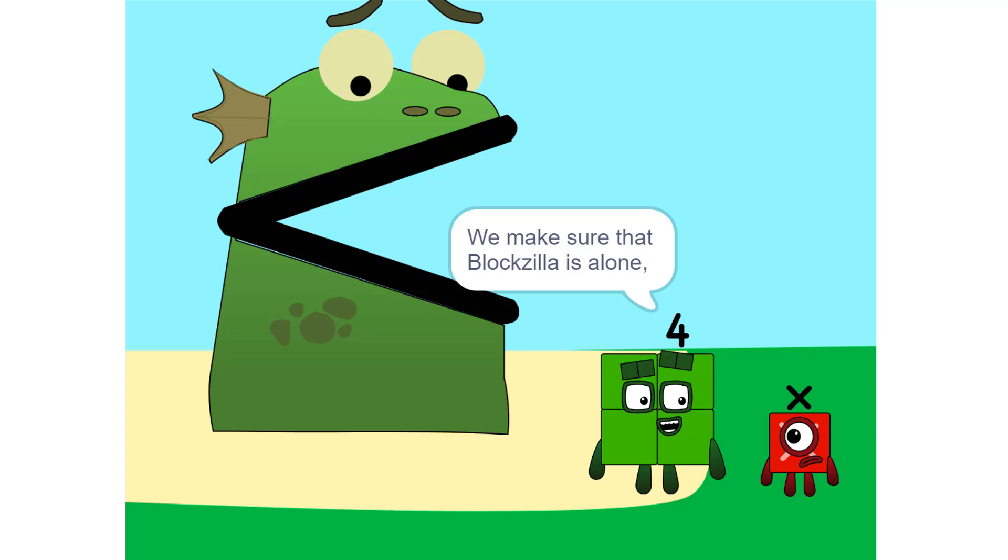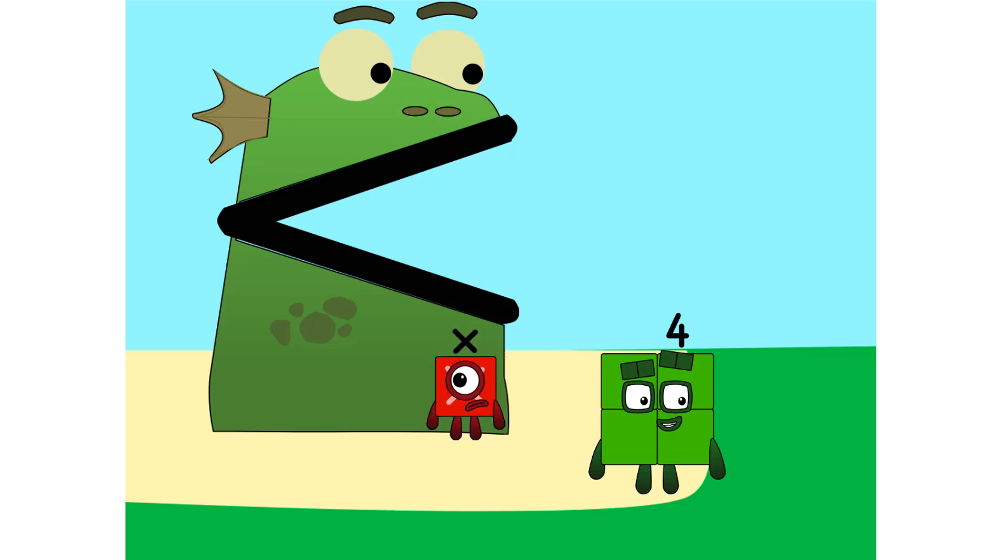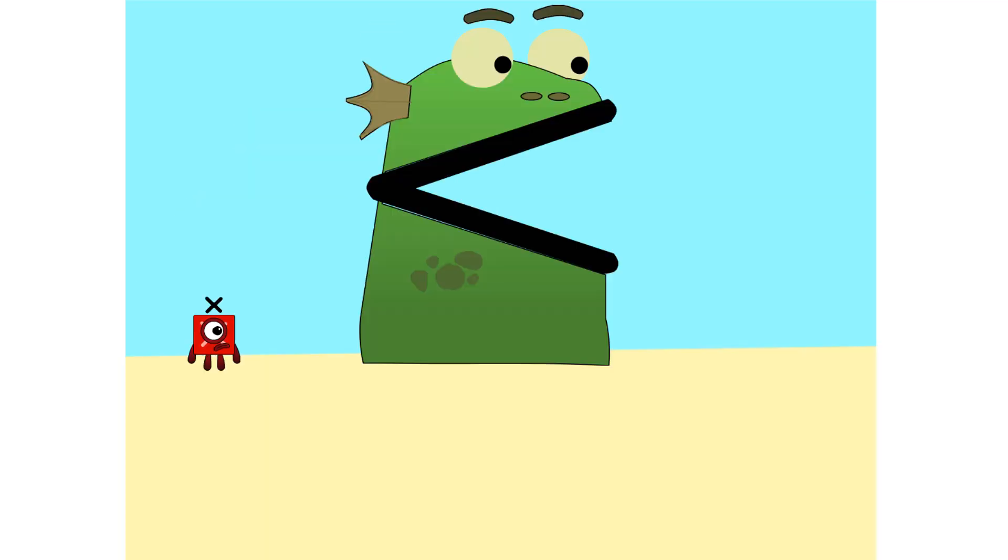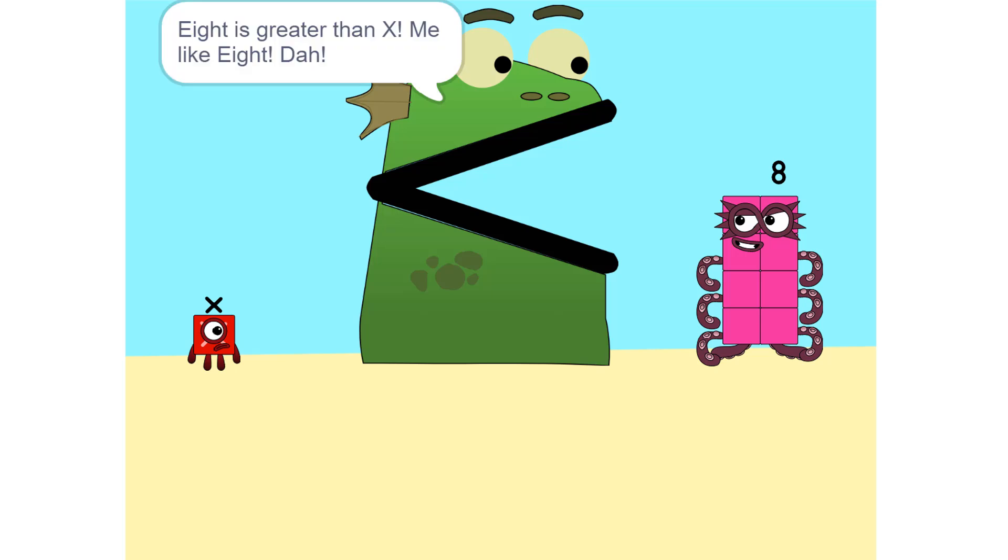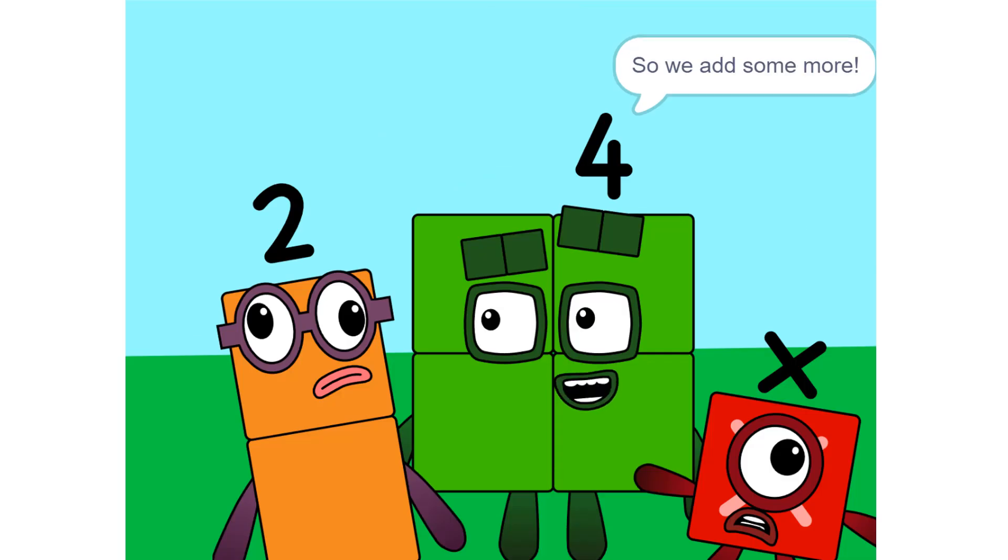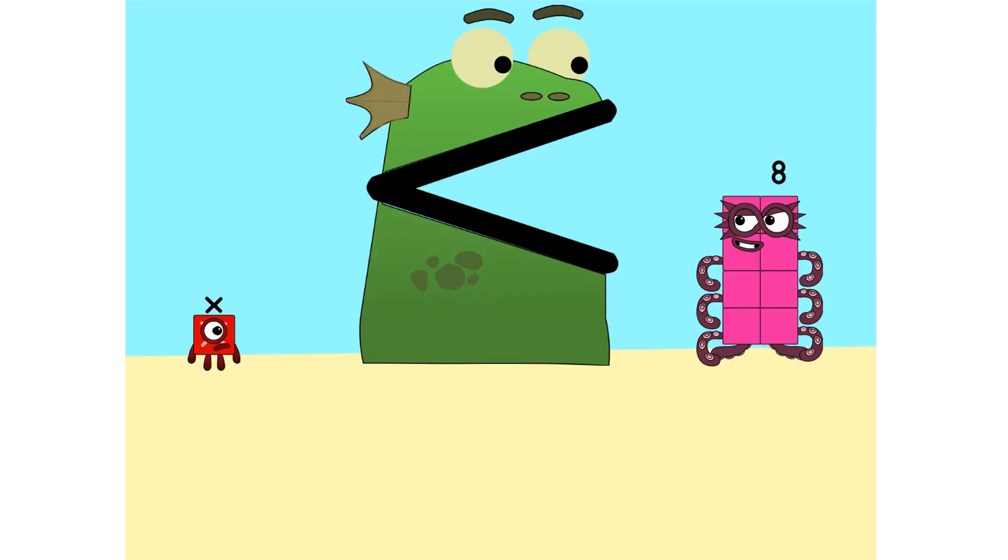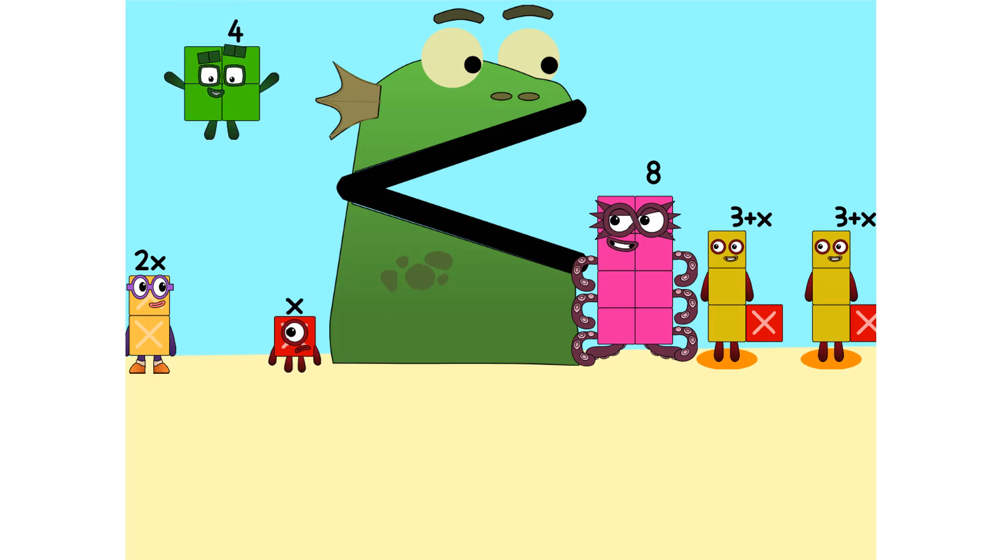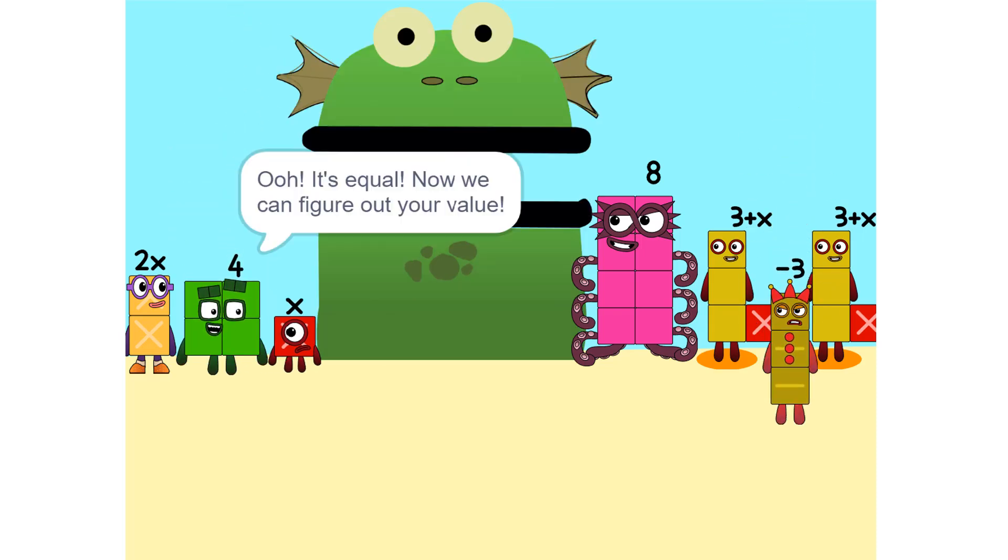We make sure that Blockzilla is alone. Put you on one side and take something else and put it on the other. It is greater than X. Me like it. Too heavy. So we add some more. 2 times X equals 2X. Nope. It's equal. Now we can figure out your value.